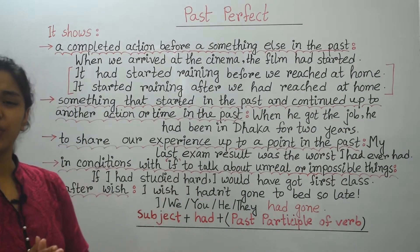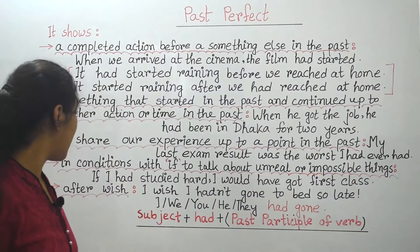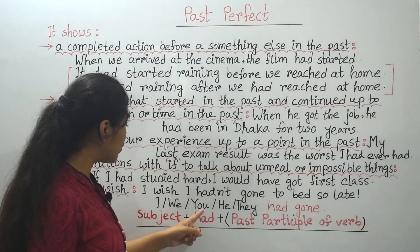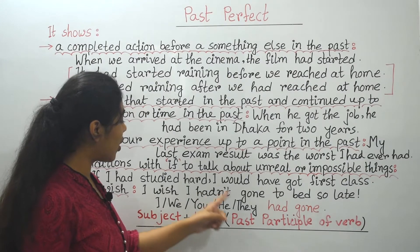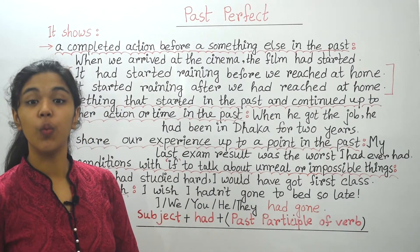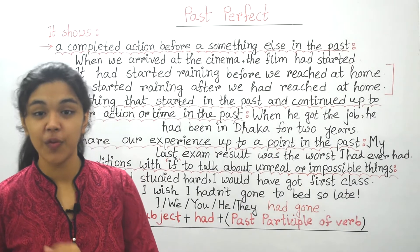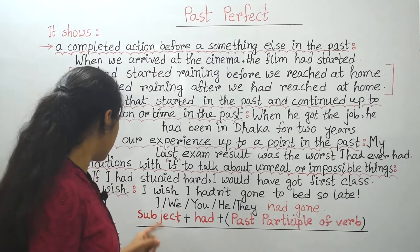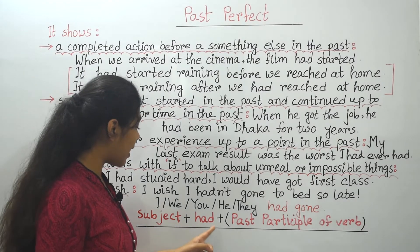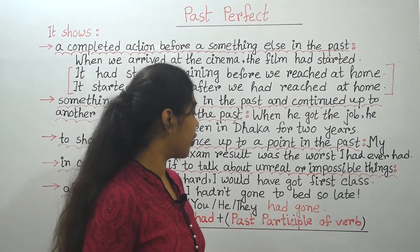If we remember the tenses chart, we can see: I, we, you, he, or they — all use 'had gone.' So with all subjects we can make a structure which is: subject + had + past participle of the verb.